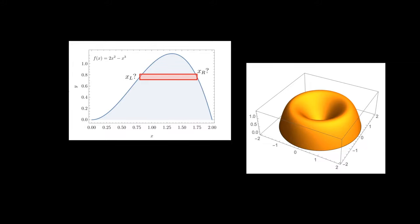Suppose we are given the function f(x) equals 2x squared minus x to the power 3, which is indicated over here.